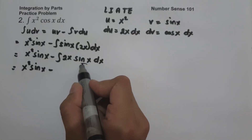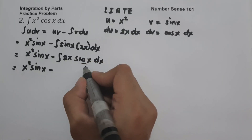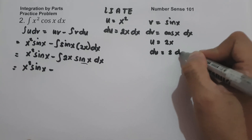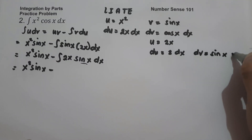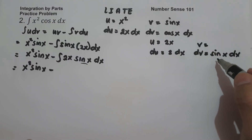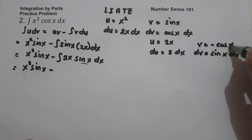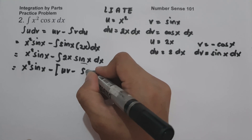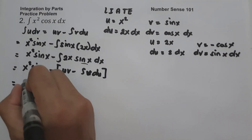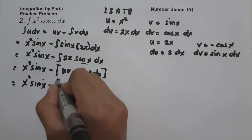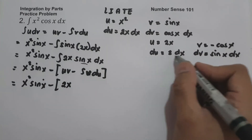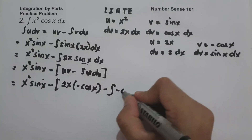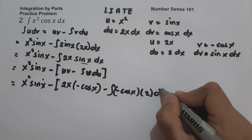Since the remaining integral still requires integration by parts, we set a new u = 2x, du = 2 dx, dv = sin(x) dx, and v = the antiderivative of sin(x), which is negative cos(x). Applying the formula: u·v minus the antiderivative of v·du gives 2x·(−cos(x)) minus the antiderivative of (−cos(x))·2 dx.